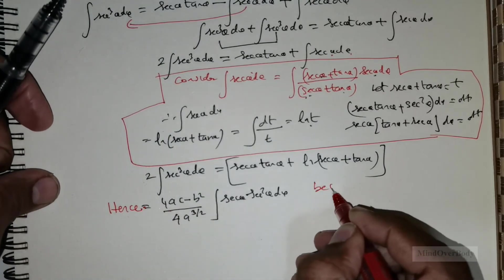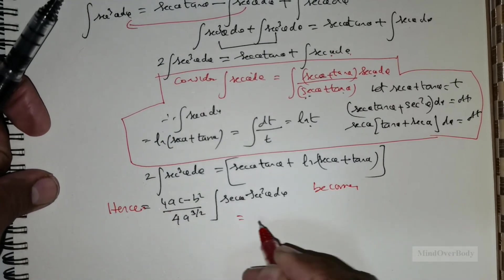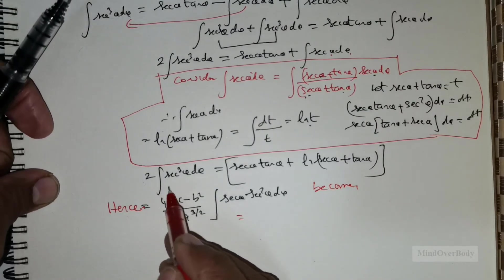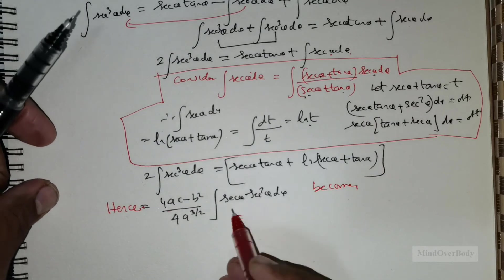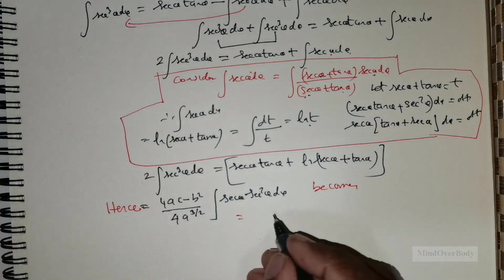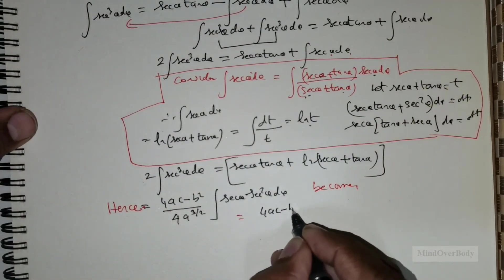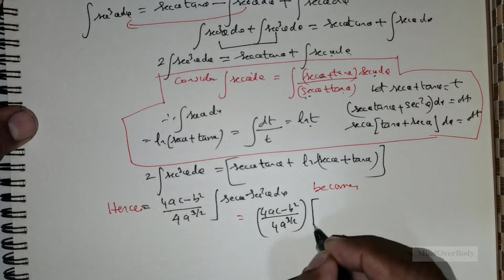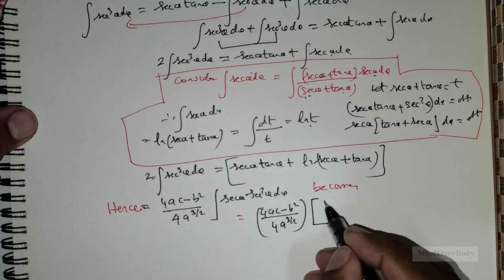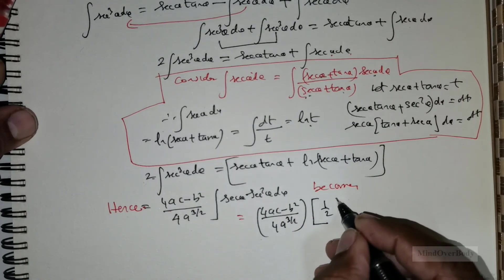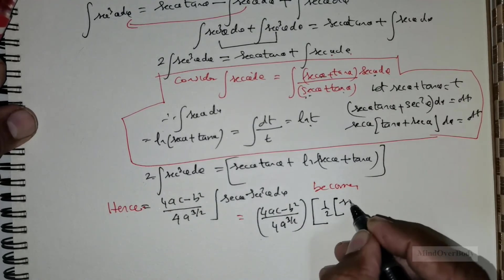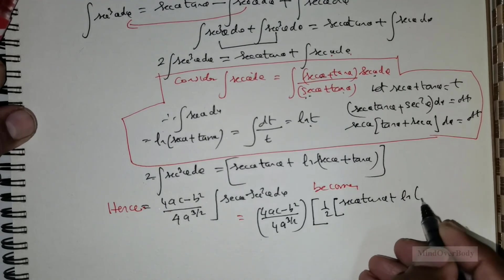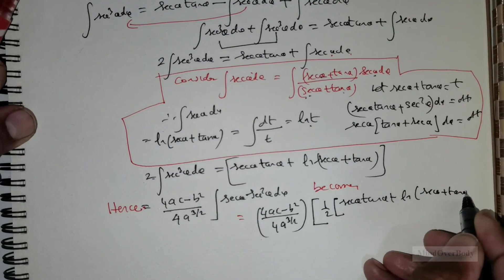This becomes equal to (4ac − b²) / (4a^(3/2)) times one half, rewritten as (4ac − b²) / (8a^(3/2)) times (sec θ · tan θ + ln|sec θ + tan θ|).